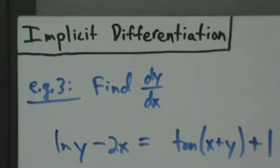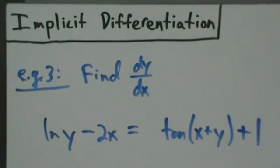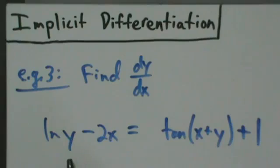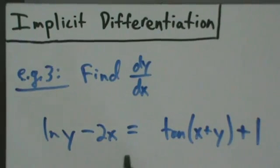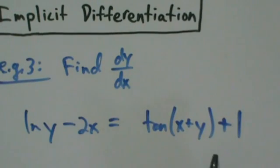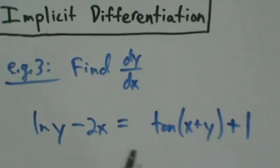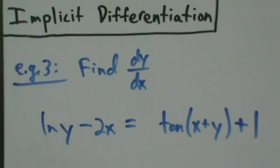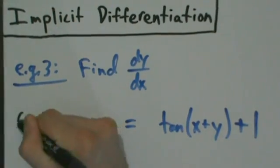Okay, so here's example three with implicit differentiation. Again, we just want to find dy/dx. So here we have ln y minus 2x equals tangent of x plus y, and then plus one. Just like the other two examples we've done so far, this is from our first video. So step one: take the derivative of both sides with respect to x.